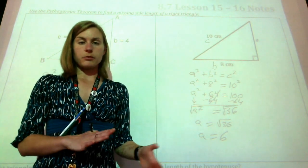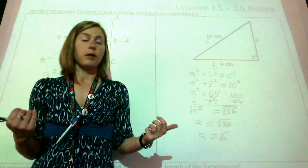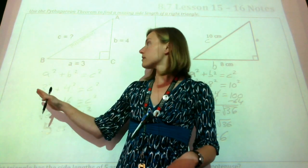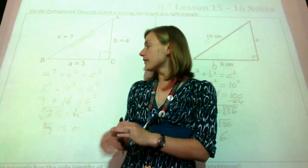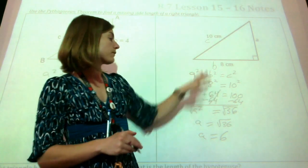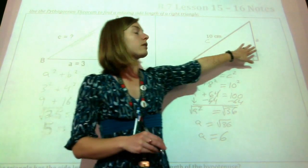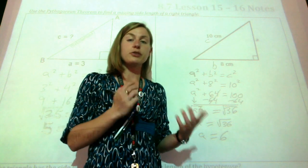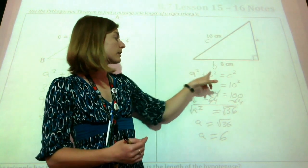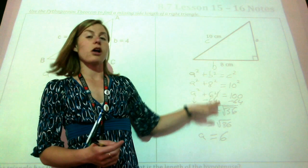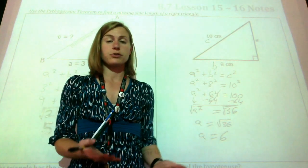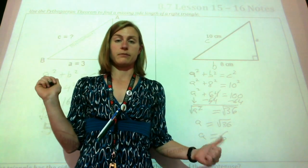The main problem I see people get with these problems is mixing up the two different ways. You have a different method if you're solving for the hypotenuse than if you're solving for one of the sides. So be really careful about putting each number in its proper place and then solving for that unknown with the proper techniques. Don't do shortcuts because you're going to mix yourself up.